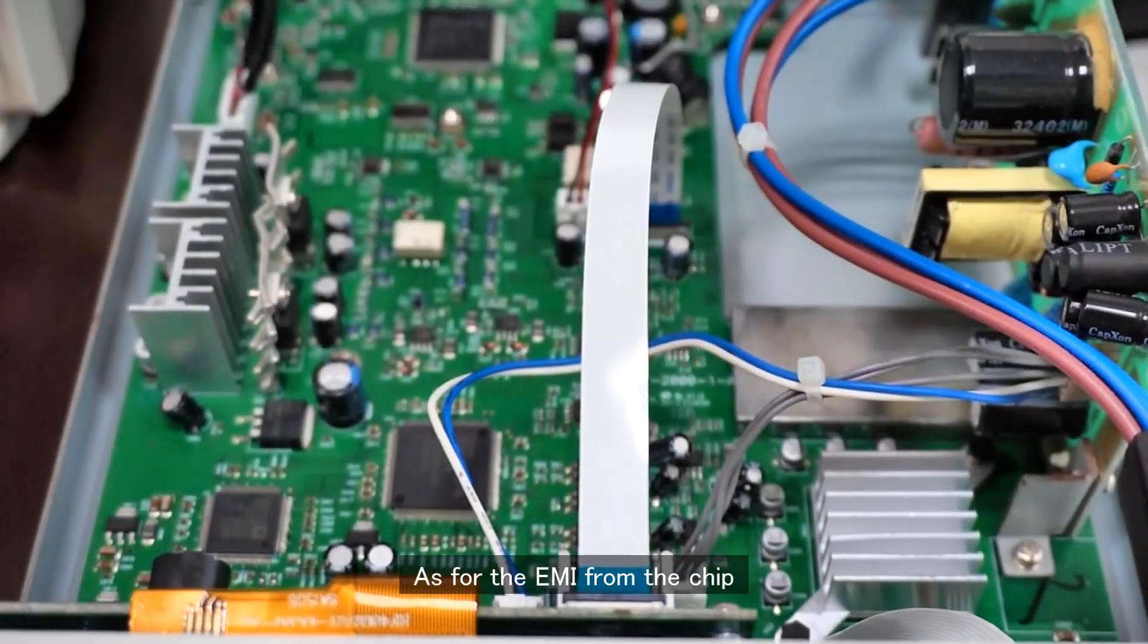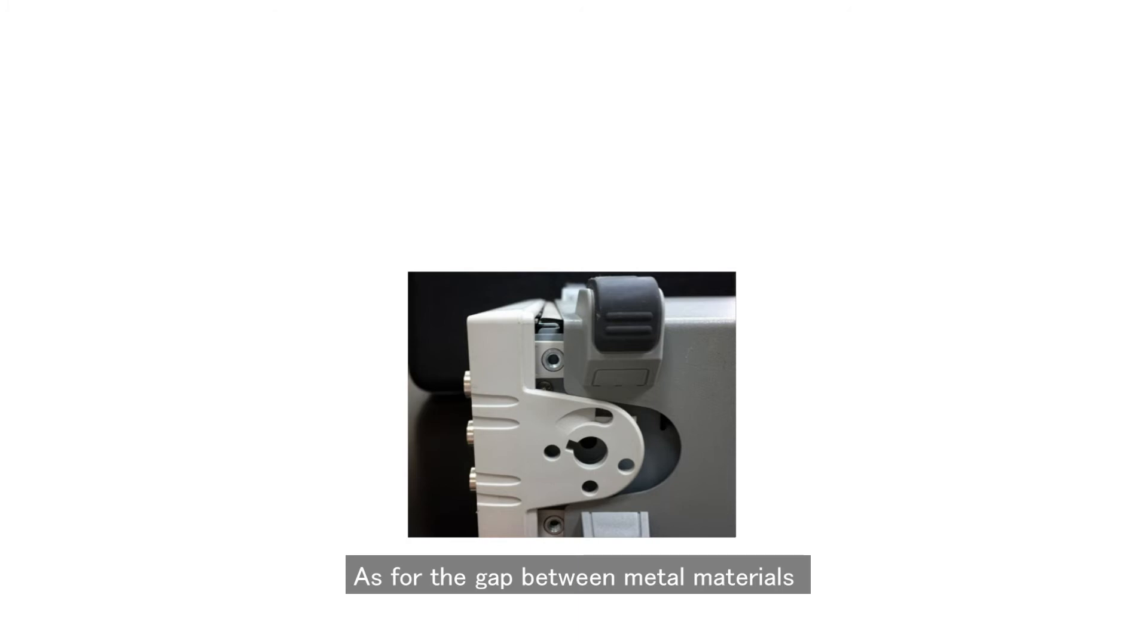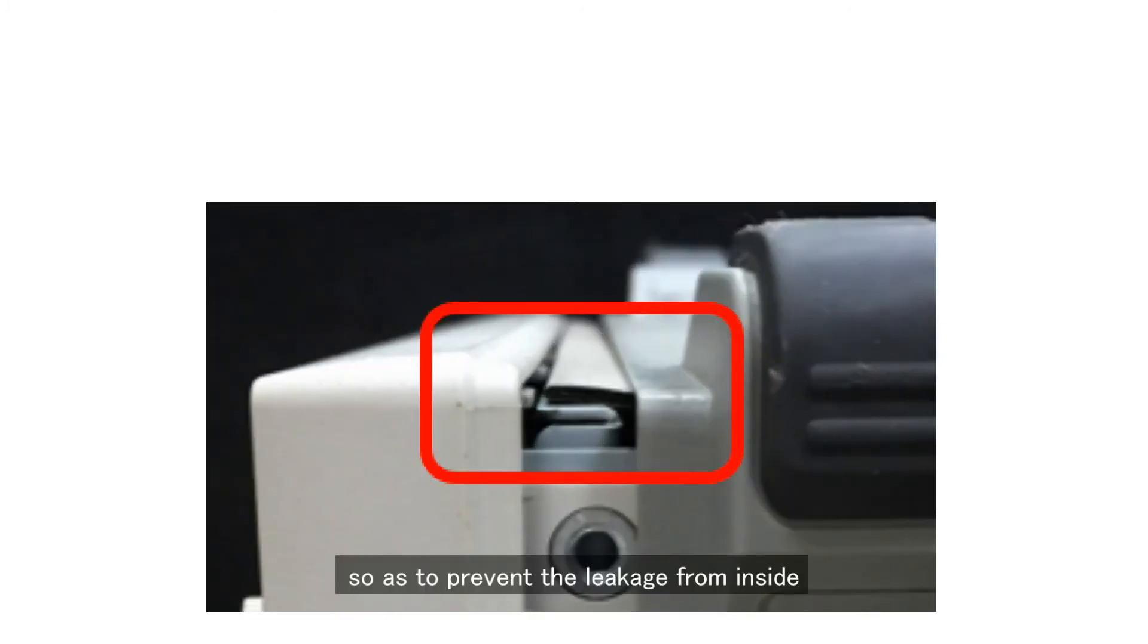As for the EMI from the chip, a series resistor or shunt capacitor can be used to reduce the EMI of the clock signals and their harmonics. As for the gap between metal materials, you can fill it with EMI gasket, so as to prevent the EMI leakage from inside.